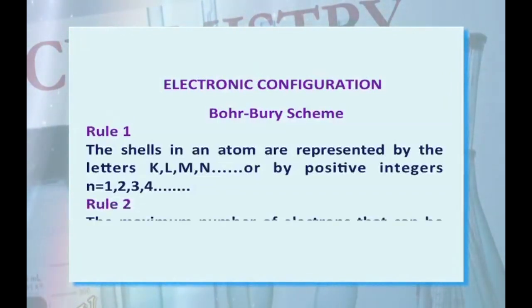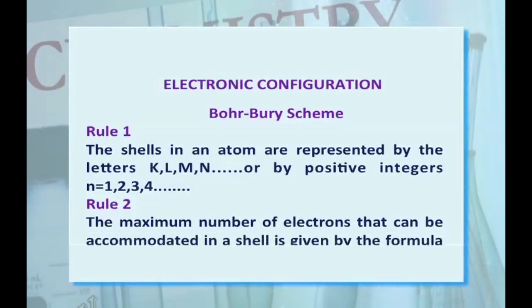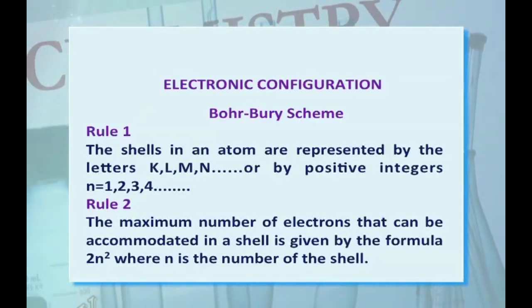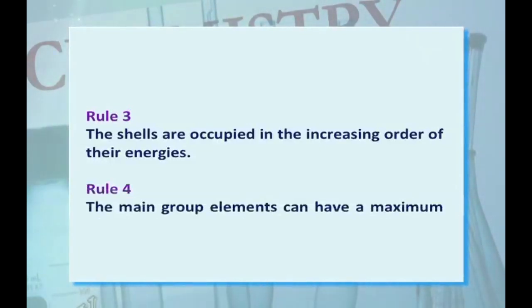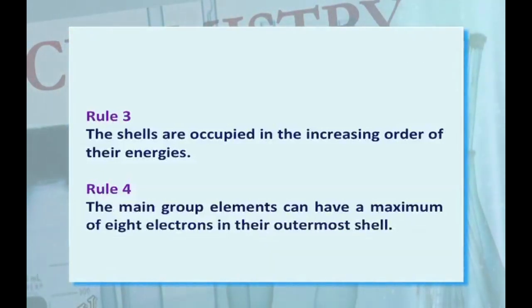Rule 2: The maximum number of electrons that can be accommodated in a shell is given by the formula 2n² where n is the number of shells. Rule 3: The shells are occupied in the increasing order of their energies. That means, first shell 1 will fill up, then electrons will go to the second shell and third shell and so on. Rule 4: The main group elements can have a maximum of 8 electrons in their outermost shell.